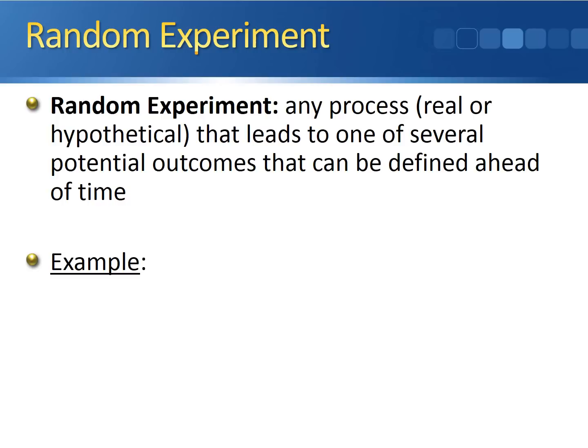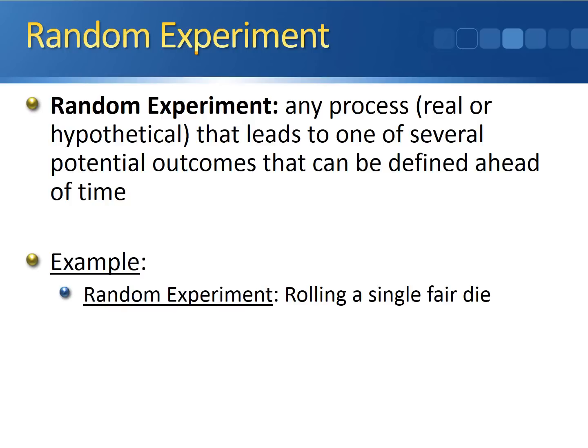One of the most common examples of a random experiment is rolling a single fair die. You have one die, you roll the die, it has six sides, the sides are numbered from one through six. This is an example of a random experiment — you don't know what number you're going to roll ahead of time; the number that comes up is essentially random.